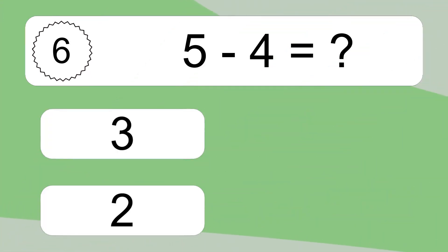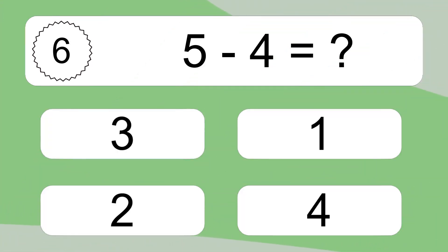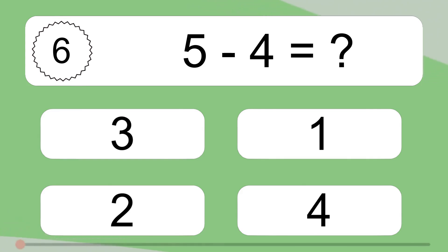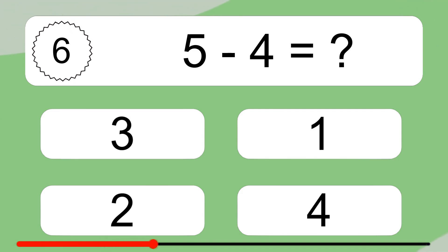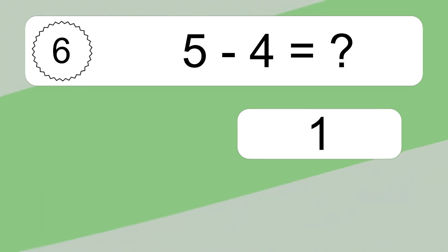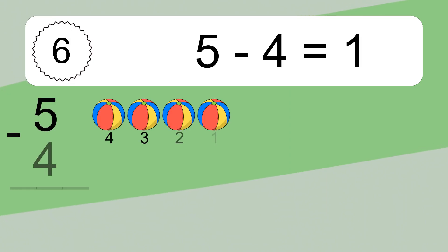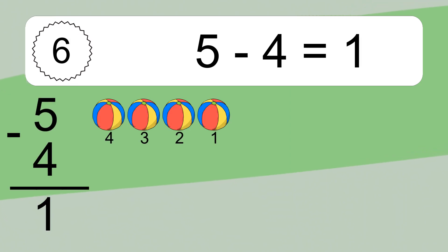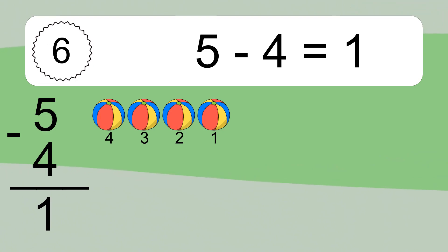5 minus 4 equals what? 5 minus 4 equals 1. Let's count it: 4, 3, 2.